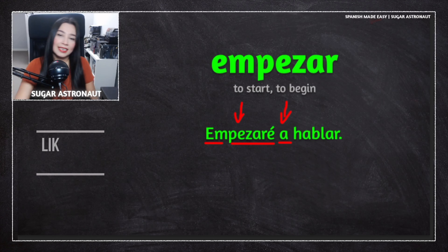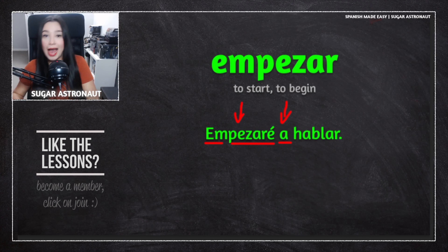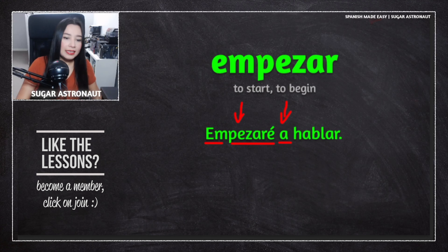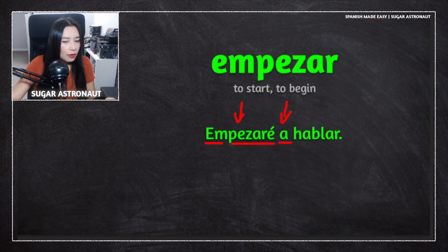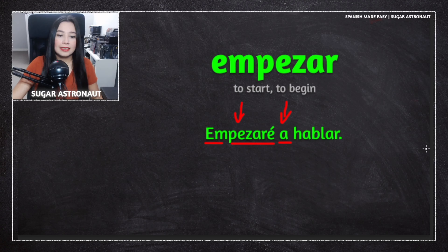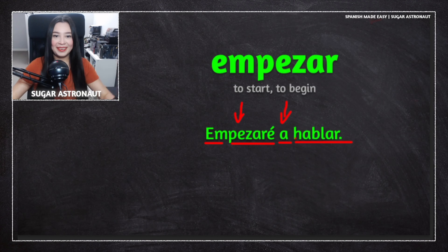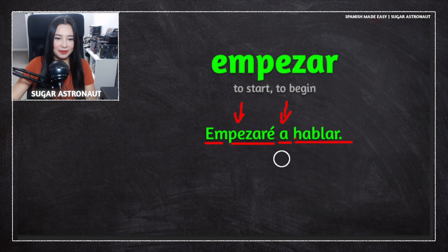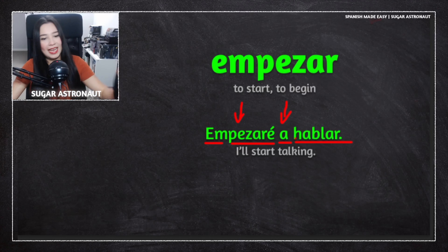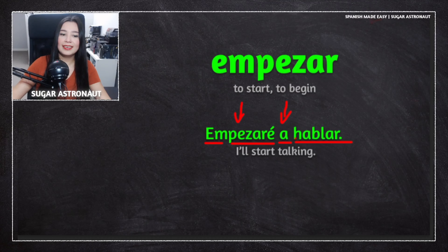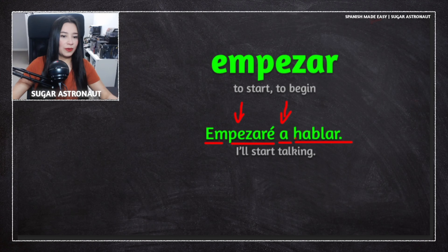If you want to add more to the sentence, you can use empezar plus 'a'. In this situation it's future tense. So 'yo empezar a' means 'I will start' or 'I will begin', and then we add a second verb: hablar, which means to talk or to speak. So the full meaning is: I'll start talking.